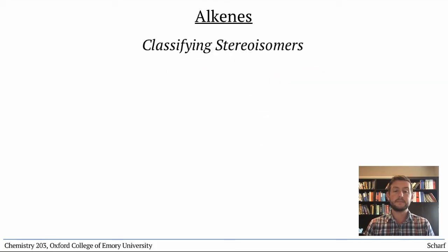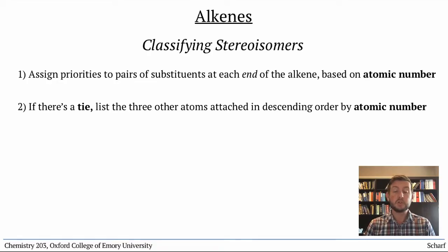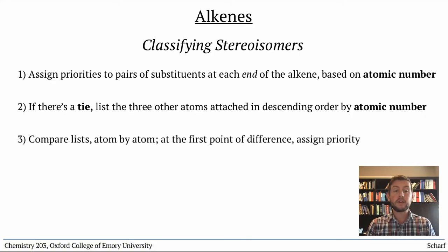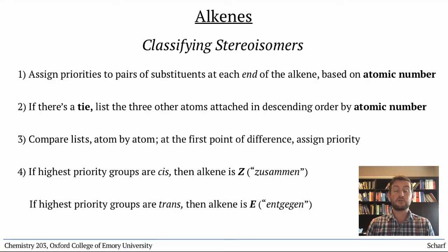With more than two substituents on the alkene, cis and trans aren't quite descriptive enough, and we use a different naming system. To use this system, we compare the two groups on one end of the alkene, assigning one group higher priority based on the atomic number of the atoms directly attached. If two of the same atom are attached — usually carbon — we list the three other atoms in order of descending atomic number and compare our lists atom by atom. When we find a difference, the group with the higher atomic number gets the higher priority. We then examine the higher priority groups on each end of the alkene. If those two groups are cis to one another, we call it the Z-alkene, for the German 'zusammen,' or together. If the two highest priority groups are trans to one another, we call it the E-alkene, for 'entgegen,' or opposite.